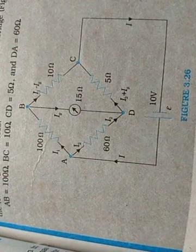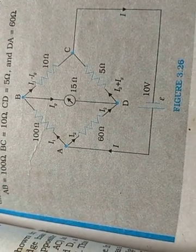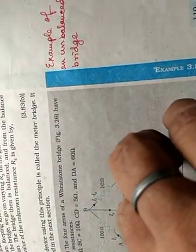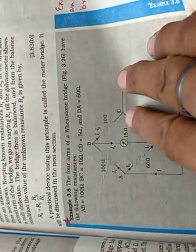The galvanometer has 15 ohm resistance. Then we have to find the value of current drawn by each arm.